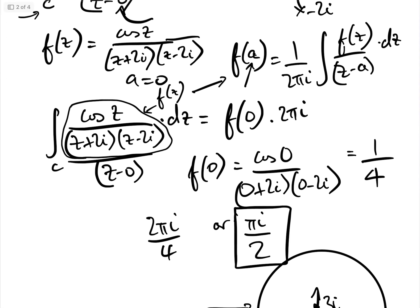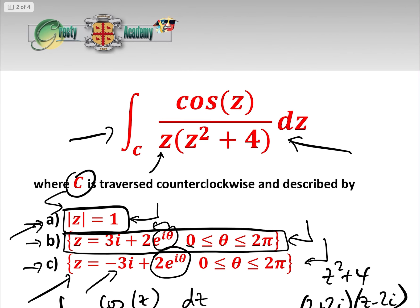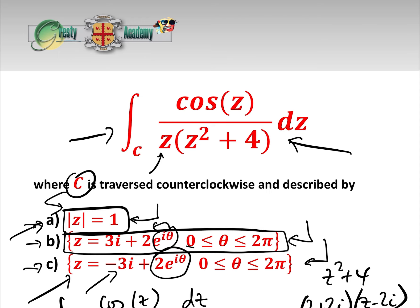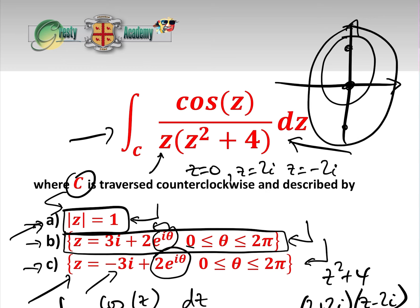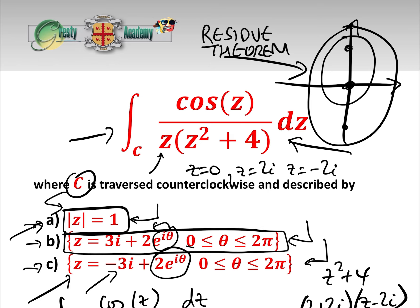That is the end of the three-video series. One remaining question: what happens if the region includes two or all three of the poles? For that we need to use the Residue Theorem, which we will cover in a separate video. I hope you found this useful — if these come up in exams they're very easy once you follow those five questions. Please like and subscribe to the Gresti Academy YouTube channel.